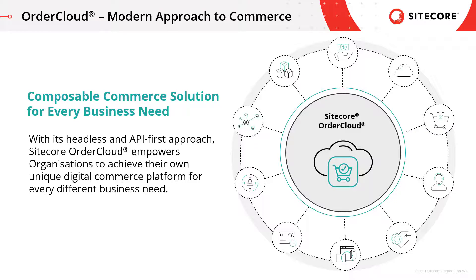Sitecore Order Cloud is the modern approach to digital commerce which can help your organization to overcome these challenges. With its composable and true headless approach, you can build future-proof, omnichannel commerce strategies for a consistent buying experience across various sales channels. As a SaaS solution, you don't have to worry about upgrades or complicated and costly infrastructure challenges, and it can be scaled whenever there is a higher load. It is built with an API-first approach from the ground up, which allows you to integrate it with any system such as your ERP, CRM, or any other system that supports standard APIs.